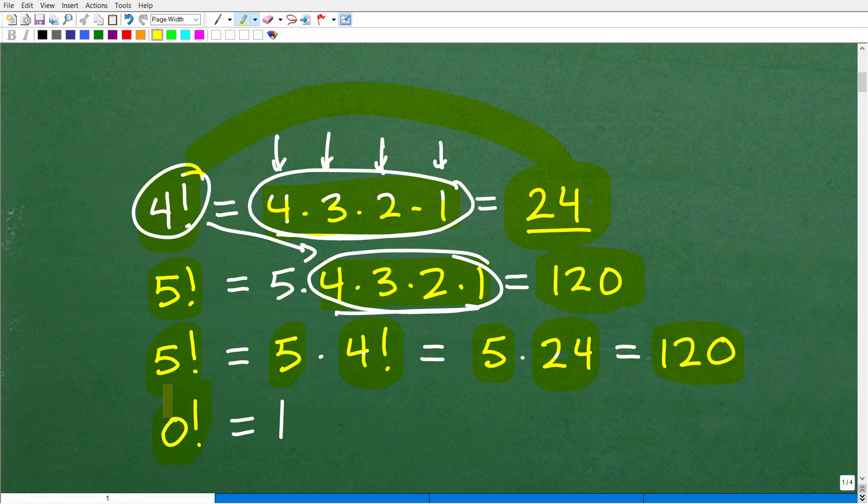Alright, but we need to go ahead and define what 0 factorial is. So some of you are like, well, what's 0 factorial? Well, that is 1, and 1 factorial is 1 as well. But if you come across 0, 0 factorial is, by definition, 1.